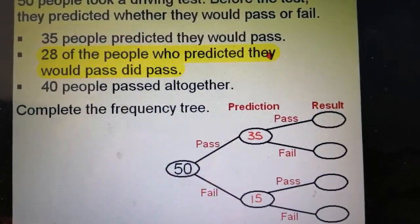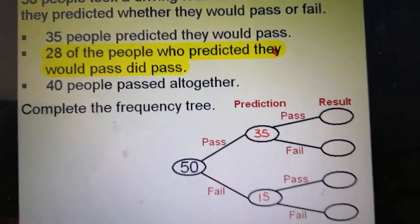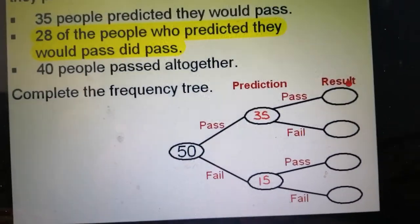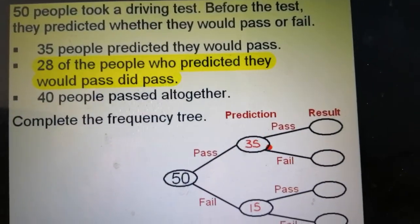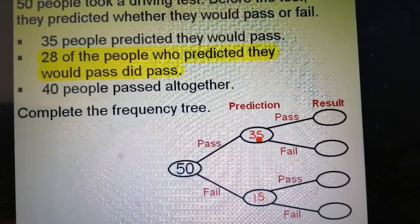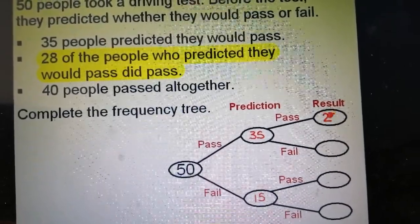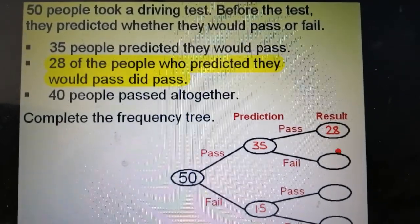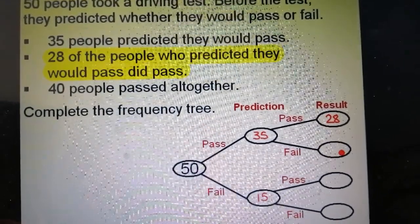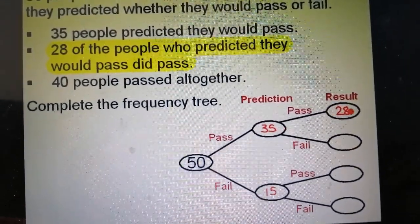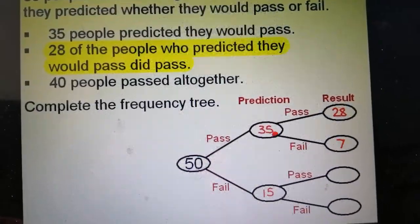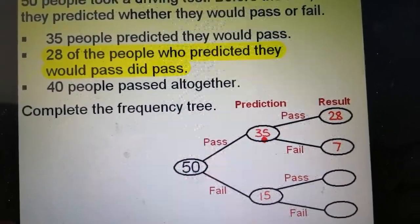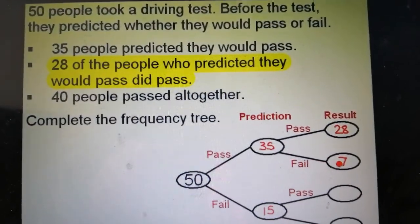This line tells me that 28 of the people who predicted they would pass did actually pass, so this is the result. For the 35 people that predicted they would pass, 28 of them did pass. Again, because they can only pass or fail, we can work out this number here: 35 take away 28 is 7, so 7 of the people who said they thought they were going to pass must have actually failed.